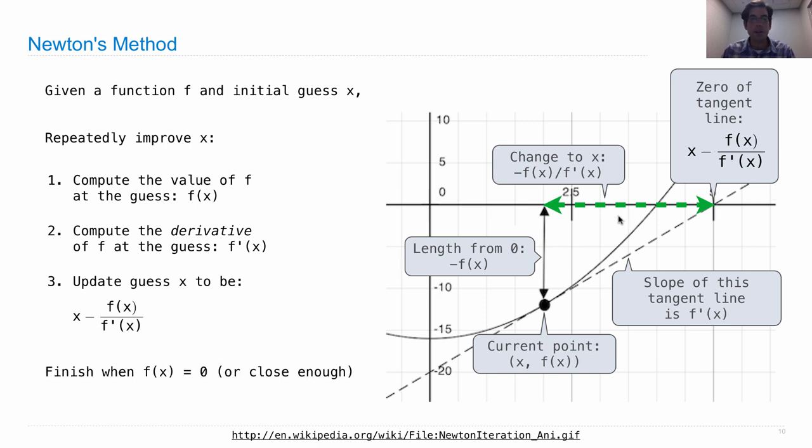So that brings us here. And then we just repeat this process until we get an x that's really close to a zero, meaning f of x is 0.